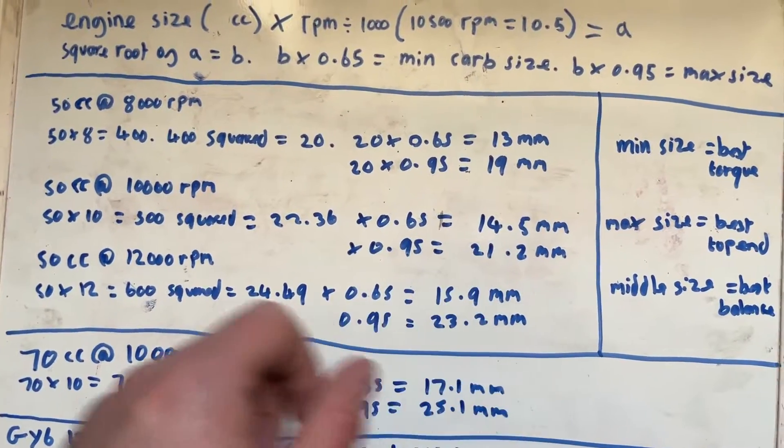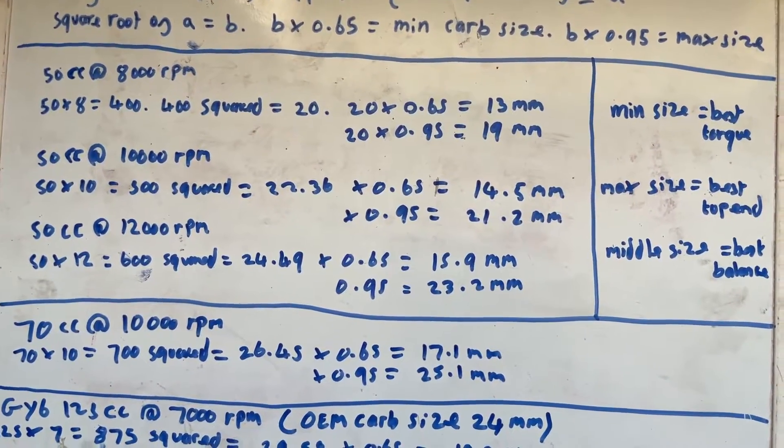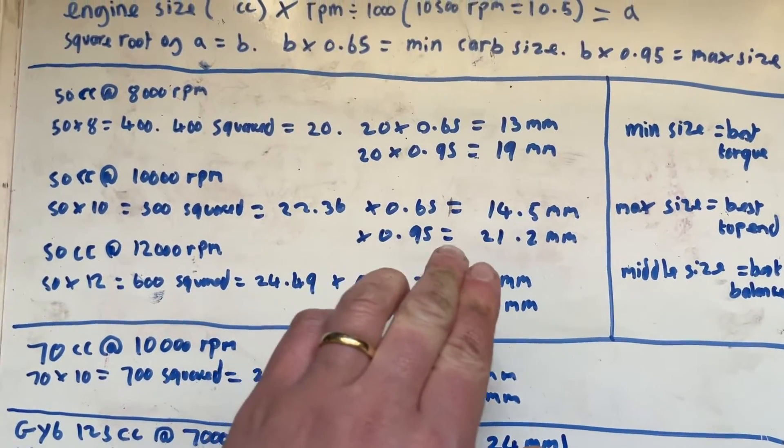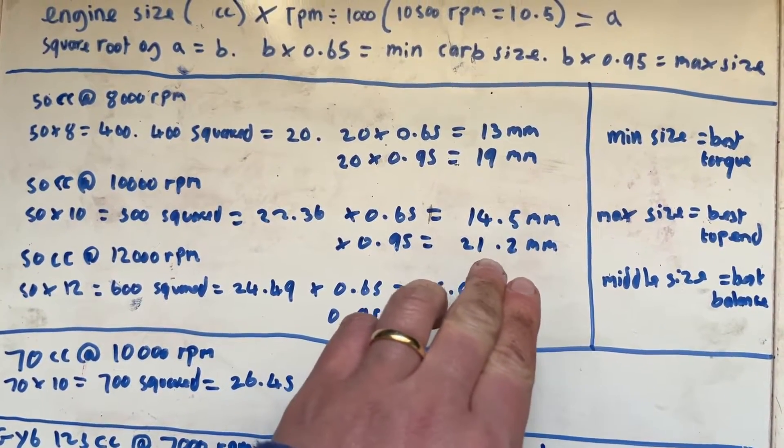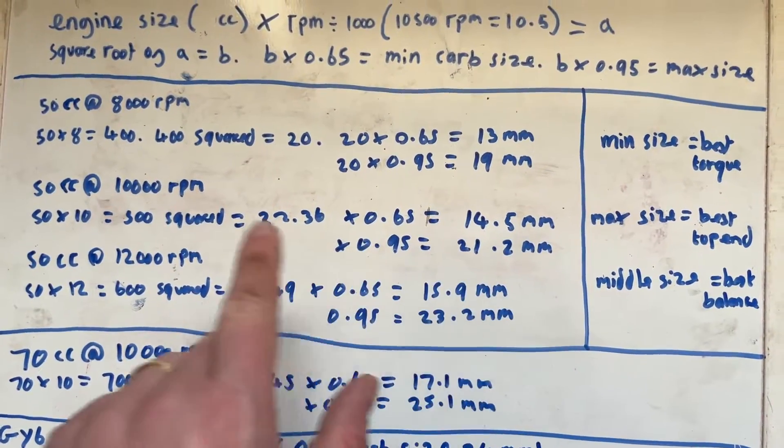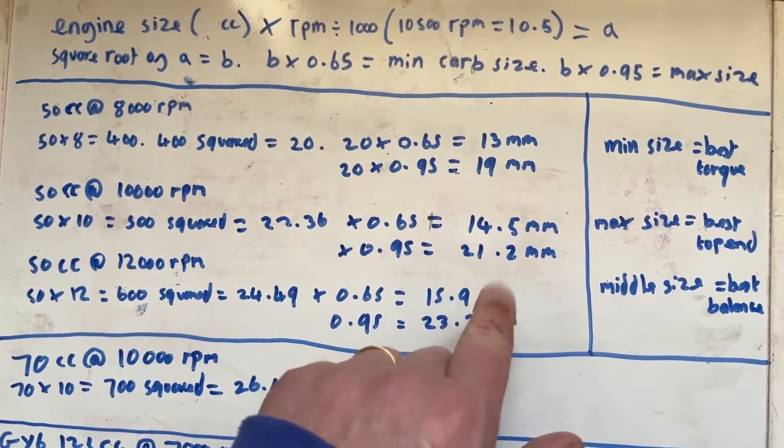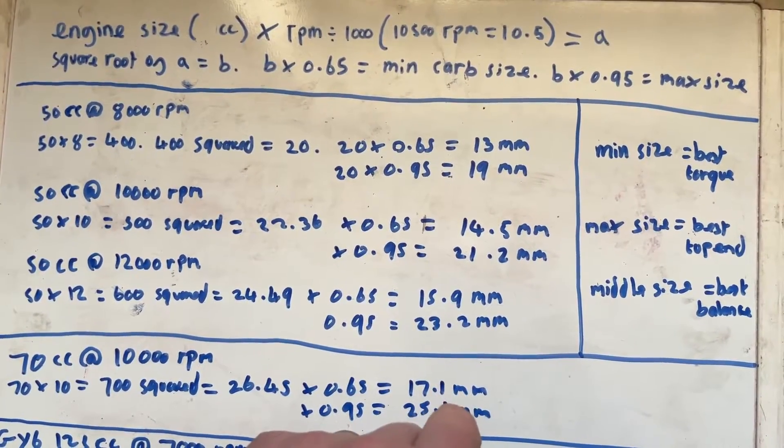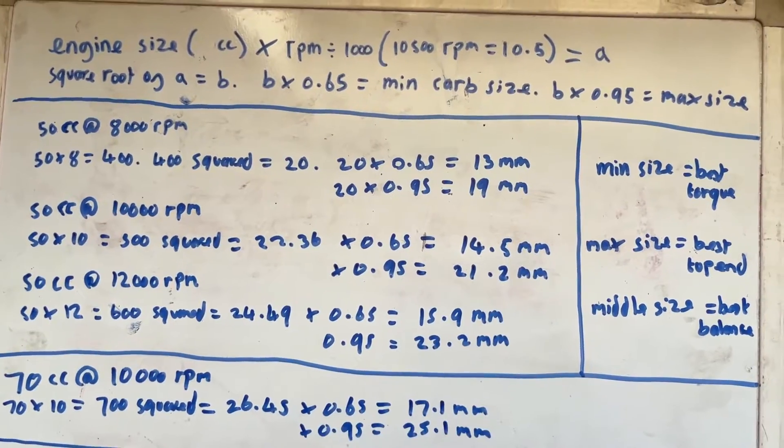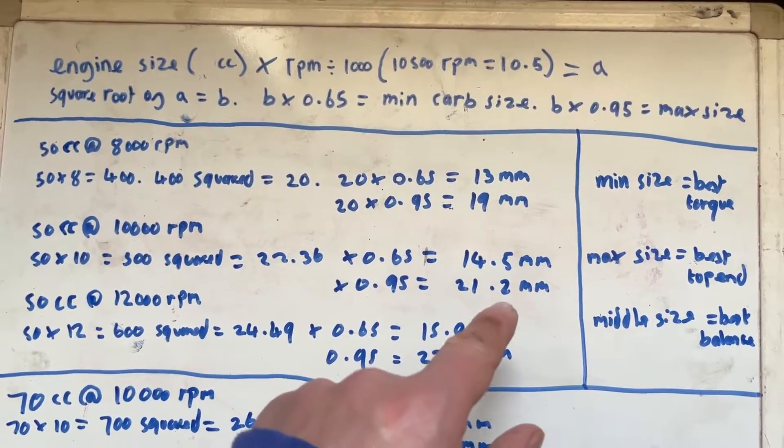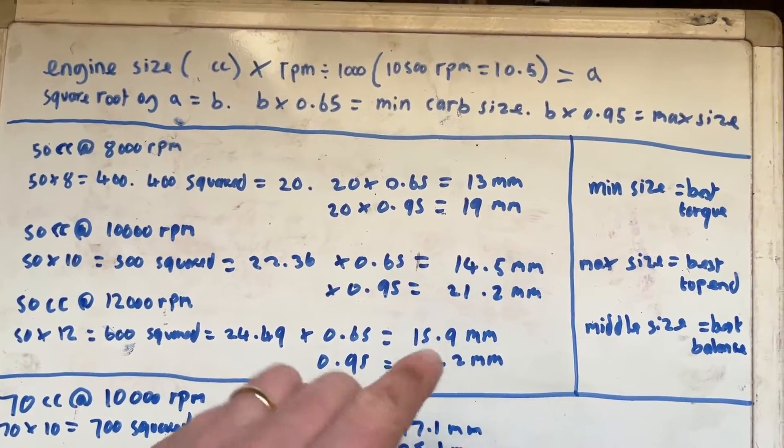So when you get a lot of people talking about running 21 millimeter carburetors on a standard 50cc cylinder, that might sound a bit big but it is actually correct. It just means that they will be running around 10,000 RPM and they will be concerned with having the best possible top end and not really caring too much about the low end pull.